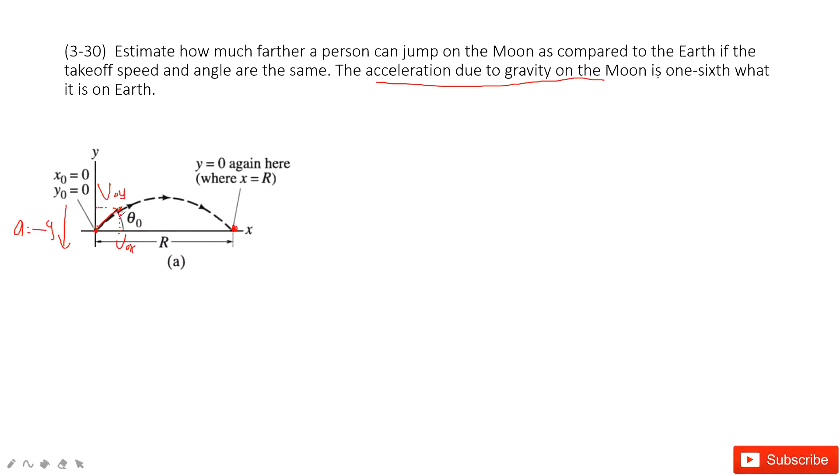Do you agree? v0x is v0 times cosine theta. v0y is v0 times sine theta.